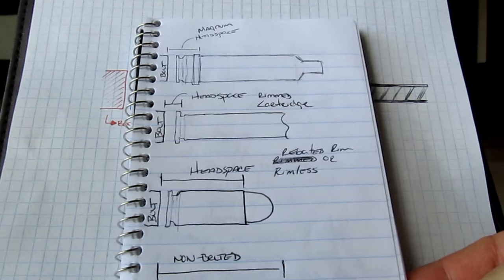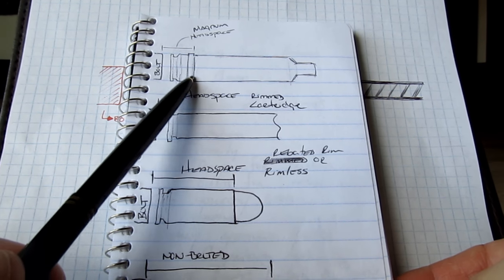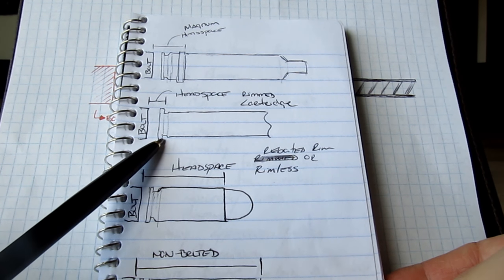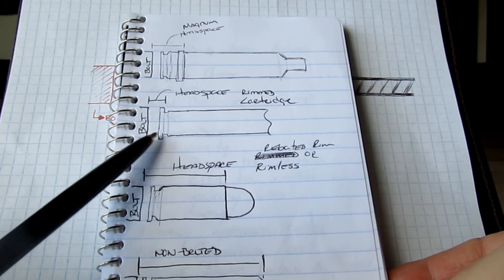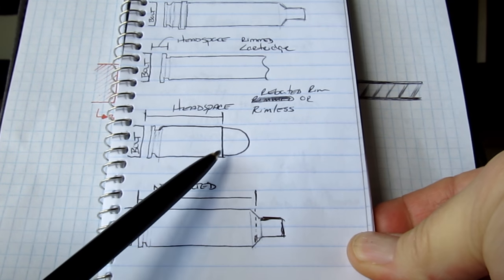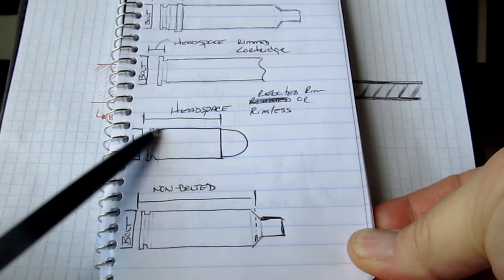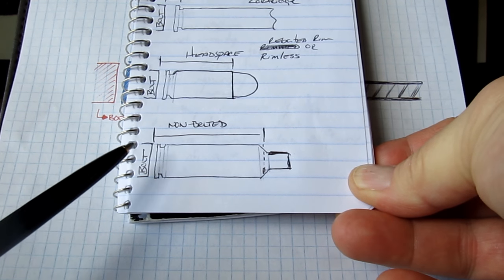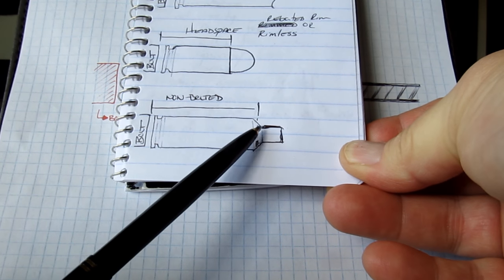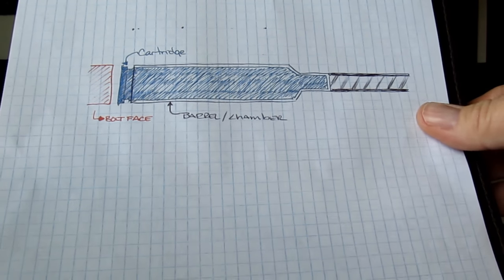So on a Magnum, what that's going to mean is it's going to be the full bolt face to the front of the belt. On a rimmed cartridge, it's going to be the bolt face to the front of the rim where it hits the steel part of your barrel. On a pistol round where it actually head spaces on the mouth right here, that's going to be where the actual headspace dimension is. On a non-belted magnum, which basically you saw in that picture that I drew for you, it's the bolt face to this invisible datum line on the shoulder, which is really what you're seeing here.